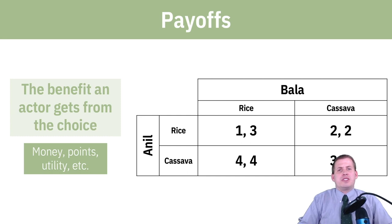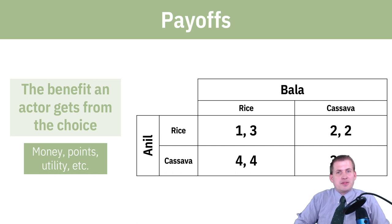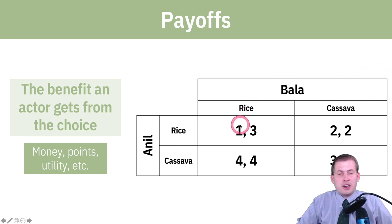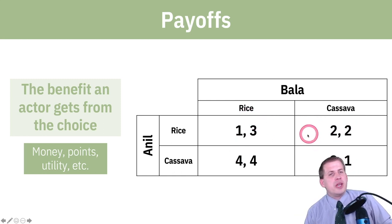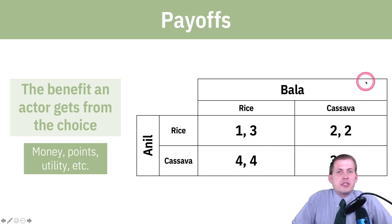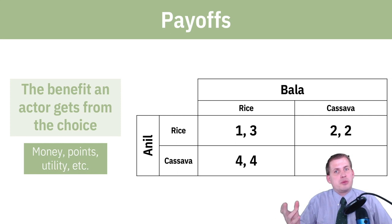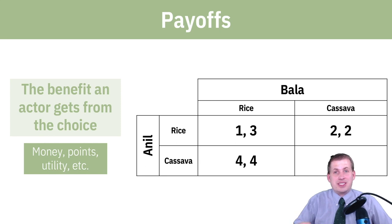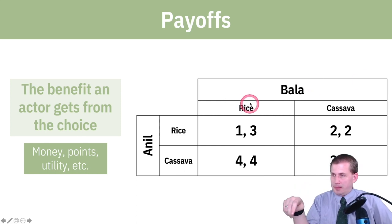In any strategic interaction with two players who have to decide what is best for them depending on what the other person is doing, every option has what is called a payoff. You'll see it often in a grid — a two-by-two matrix. A payoff, if you look at these numbers — 1, 3, 4, 4, 2, 2, 3, 1 — these can be dollar amounts, but typically they're utility points or happiness points, what economists call utils, which is a unit of utility.